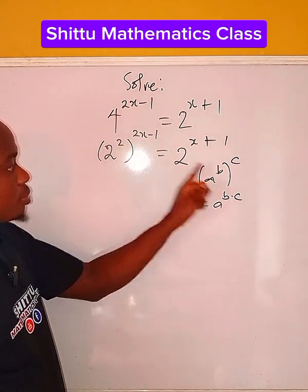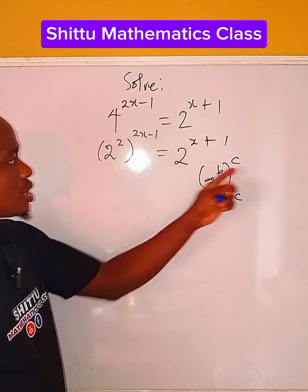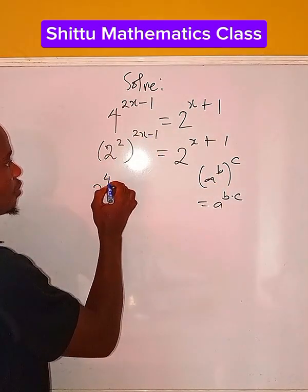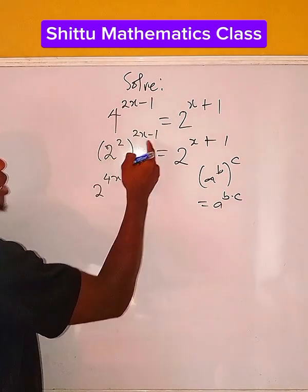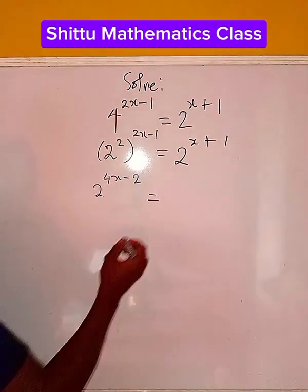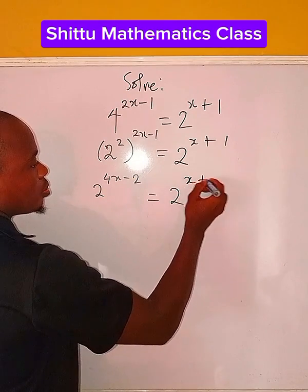So therefore, this is like what? This is like b and this is c. So we're going to have 2 to the power of 2 times this. We're going to have 4x minus 2 times 1, minus 1 is going to be 2, then equals 2 to the power of x plus 1.